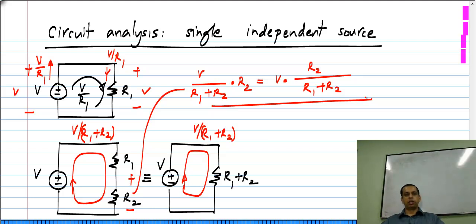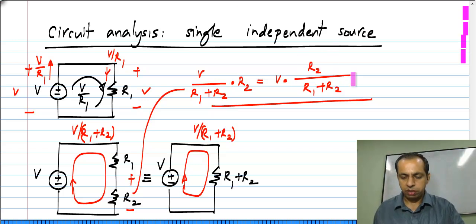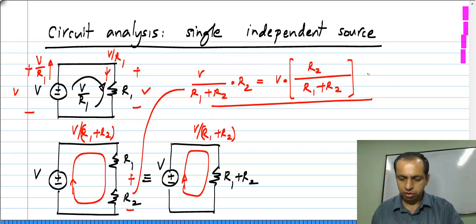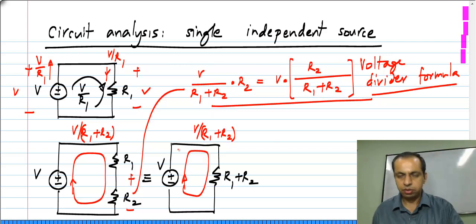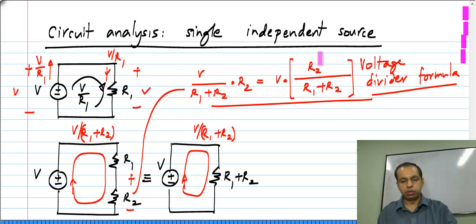This is of course the familiar voltage divider formula, which tells you that if you have a series combination of resistors excited by a voltage V, the voltage across any single resistor is the ratio of that resistance to the total resistance of the series combination times the applied voltage. So we have resistance R2 divided by the total resistance — in this case we have only two resistors — times the voltage V. This is the voltage divider formula, and if you wanted the voltage across R1, you would have R1 in the numerator instead of R2.